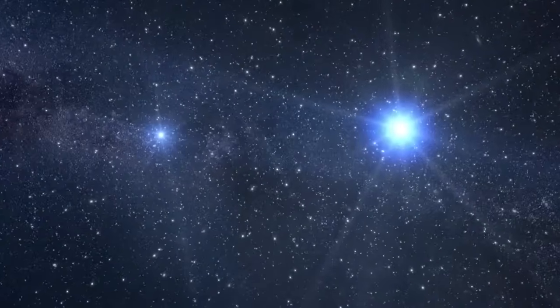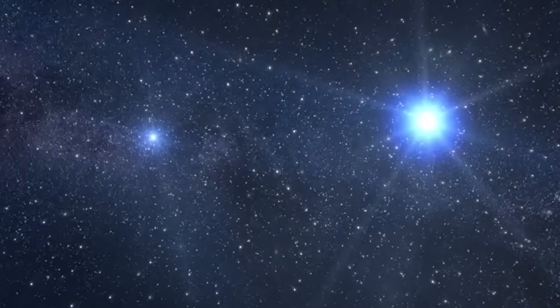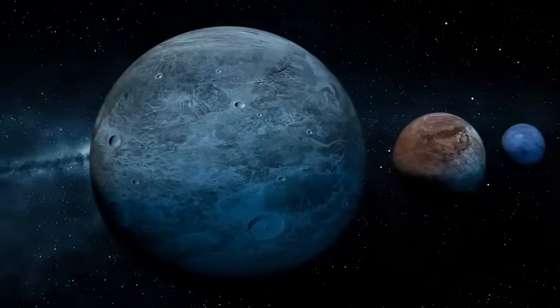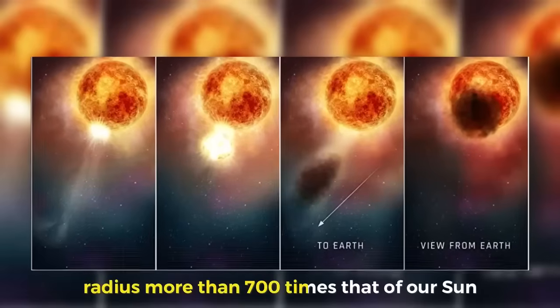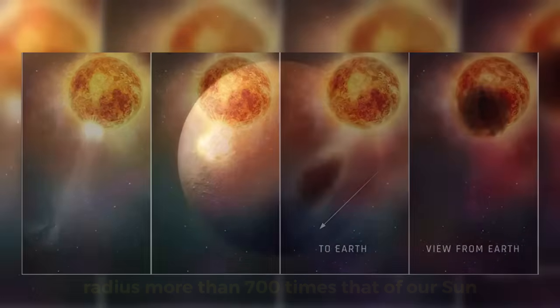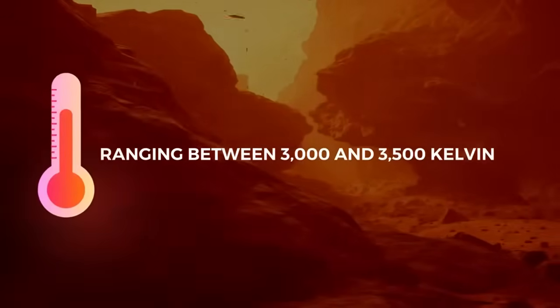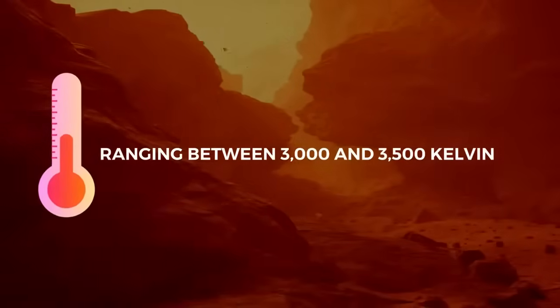To understand the significance of Betelgeuse's strange conduct, we must delve into the factors that contribute to a star's brightness. A star's luminosity is determined by its size, temperature, and distance from Earth. Betelgeuse is a true giant among stars, with a radius more than 700 times that of our Sun. Despite its enormous size, Betelgeuse is relatively cool for a star, with surface temperatures ranging between 3,000 and 3,500 Kelvin, which gives it its distinctive red color.